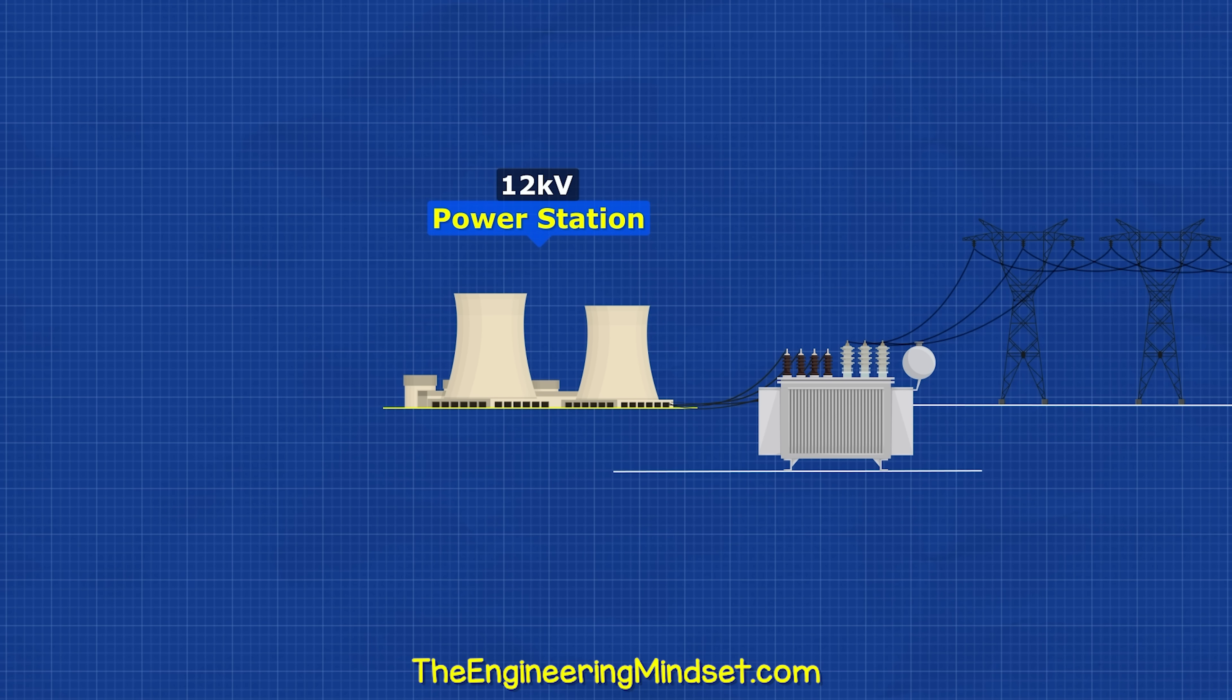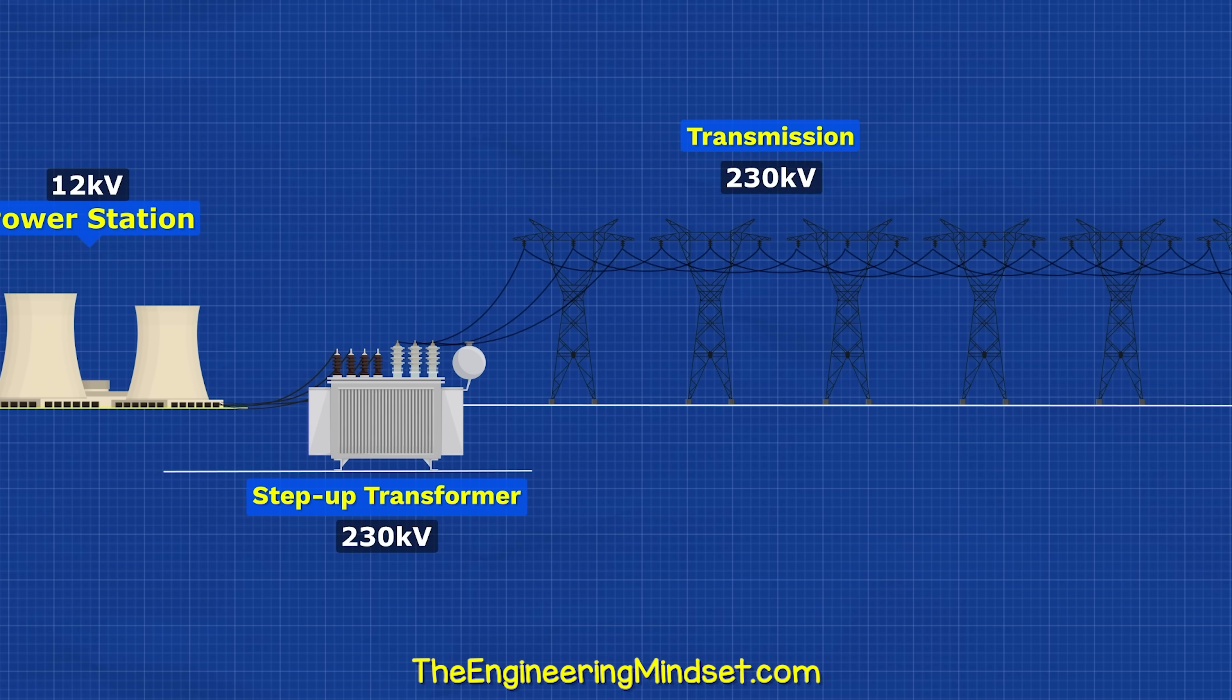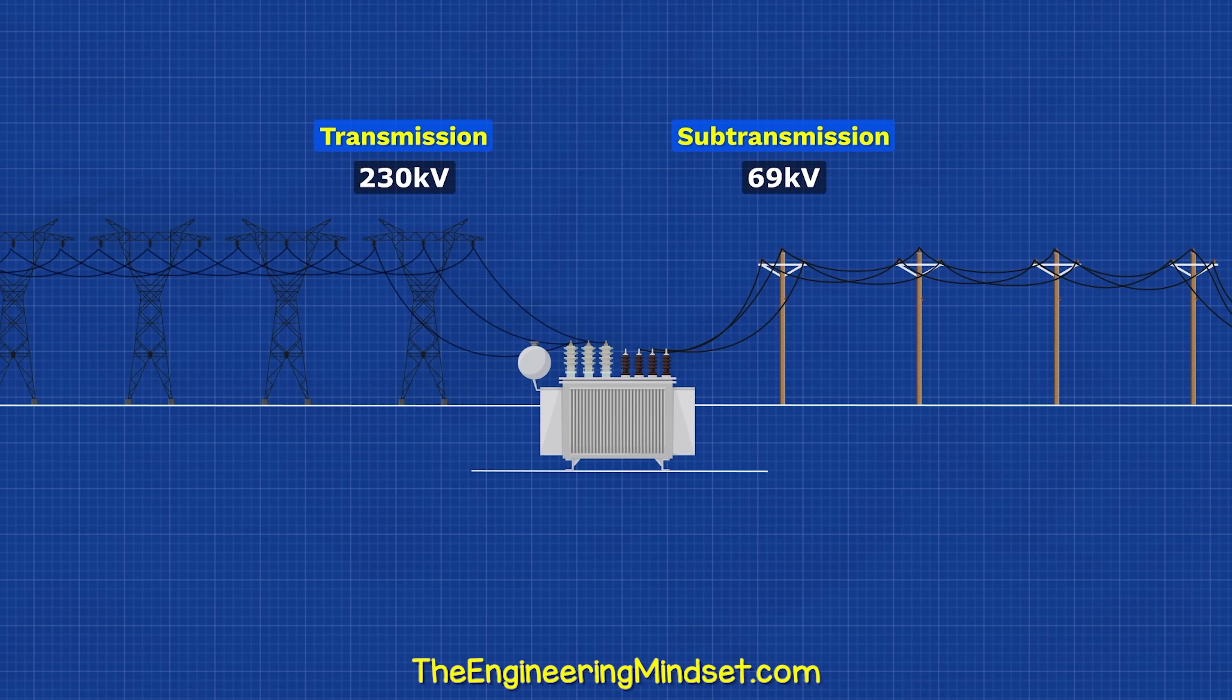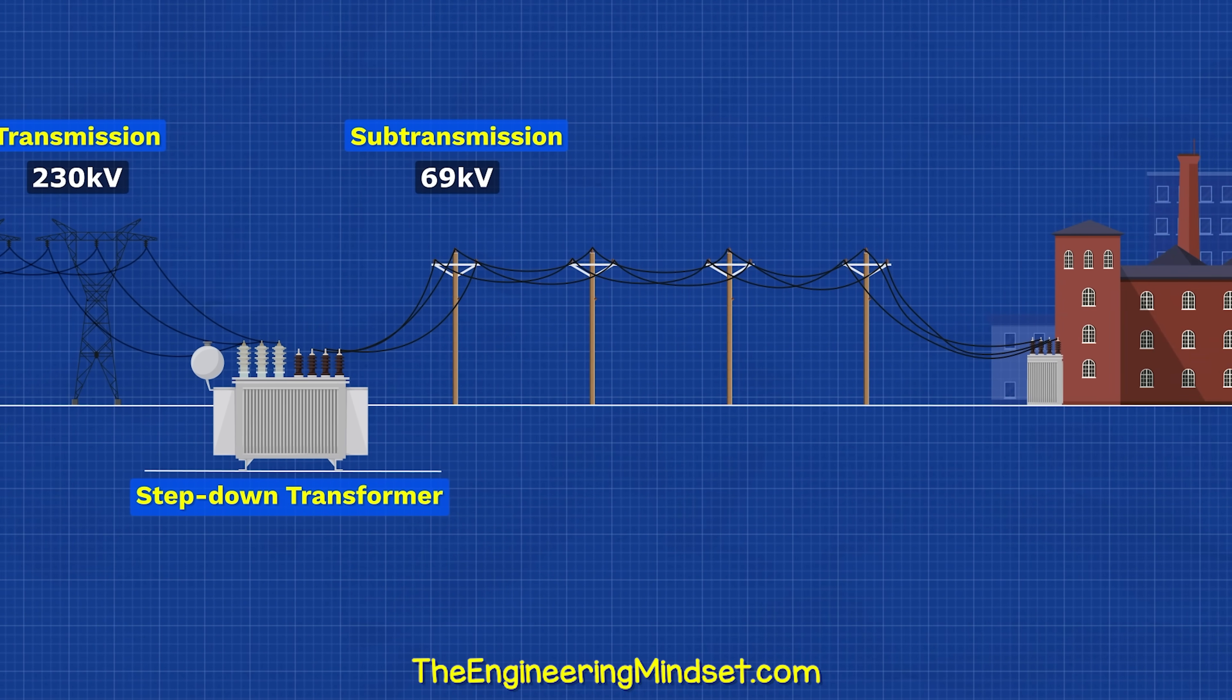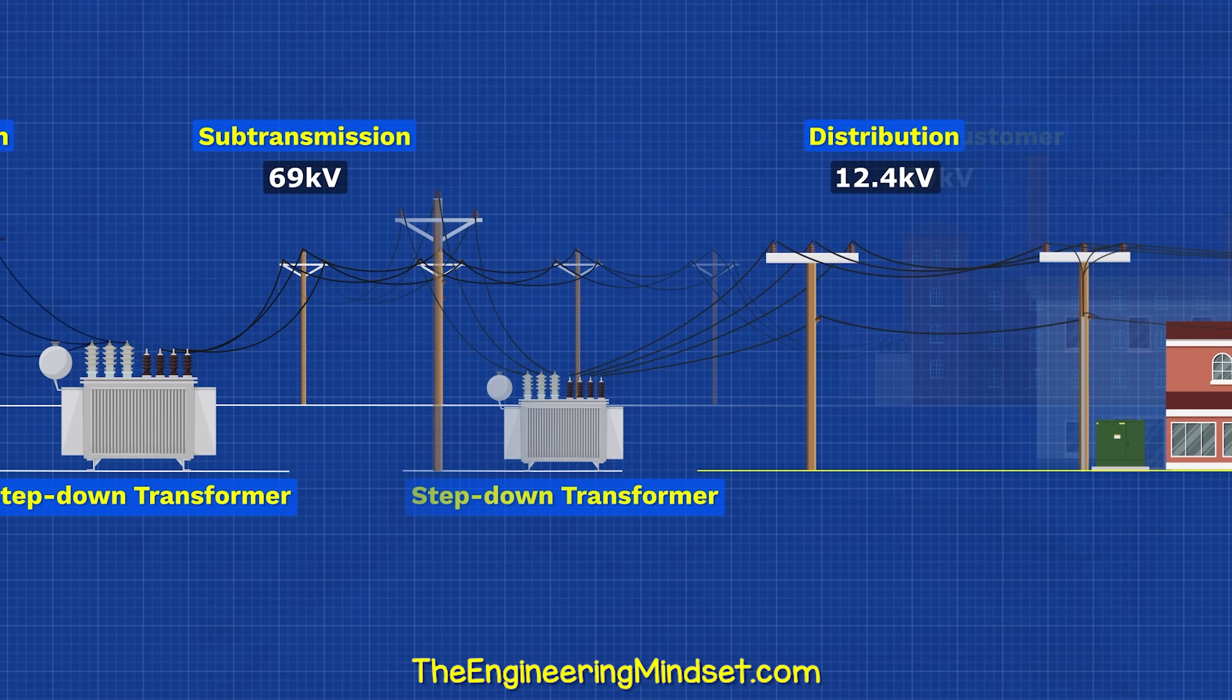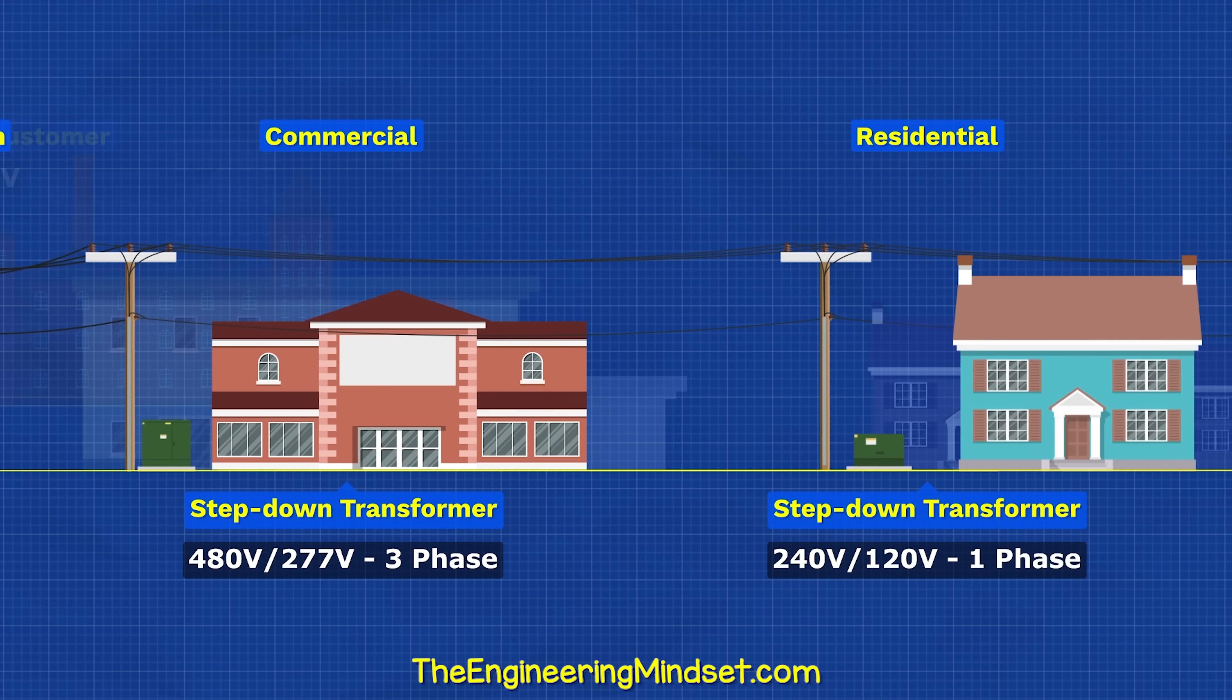Each power station generates three phases. A transformer increases the voltage to hundreds of thousands of volts. This keeps the current and energy losses low over the long transmission distance. When it reaches a city, it enters another transformer which reduces the voltage and distributes this on the sub-transmission lines. These might feed large industrial or commercial customers, but it otherwise continues to a distribution substation where the voltage is again reduced and distributed along the streets to the properties.